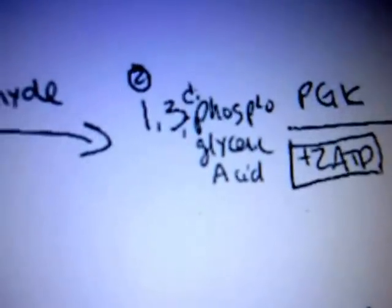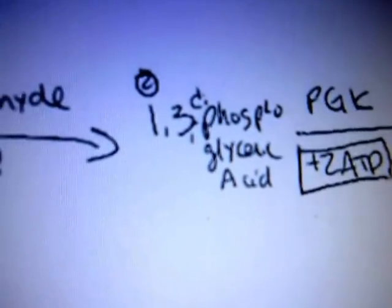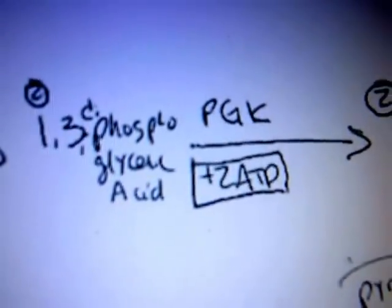Now, the glyceraldehyde dehydrogenation is going to yield us two NADHs. It's going to turn that into two molecules of 1,3-diphosphoglyceric acid. That will be acted upon by phosphoglyceric kinase, making us two ATP.